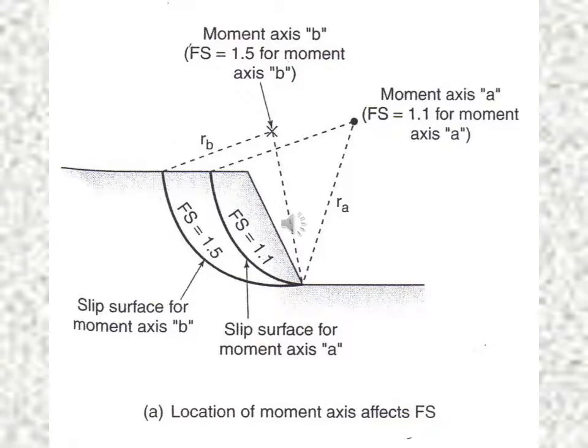The location of the moment axis varies, and so the factor of safety varies accordingly. Two trials are shown — one gives a factor of safety of 1.1 and another gives 1.5. Whatever trials are conducted for the slip surface, the factor of safety must be greater than one.